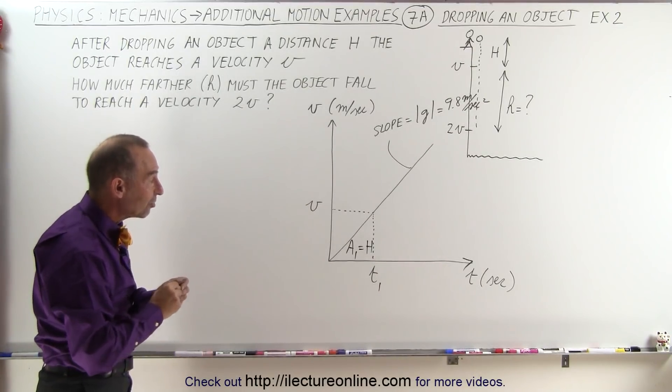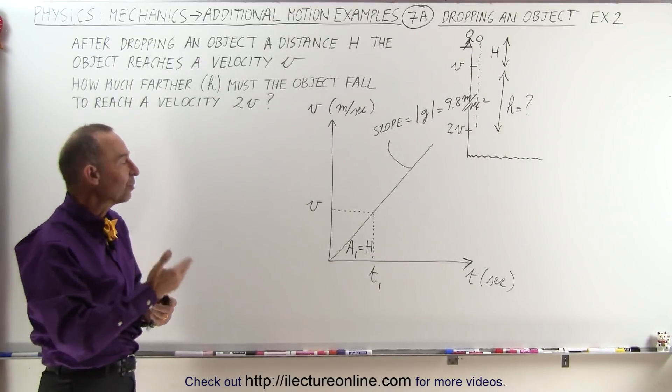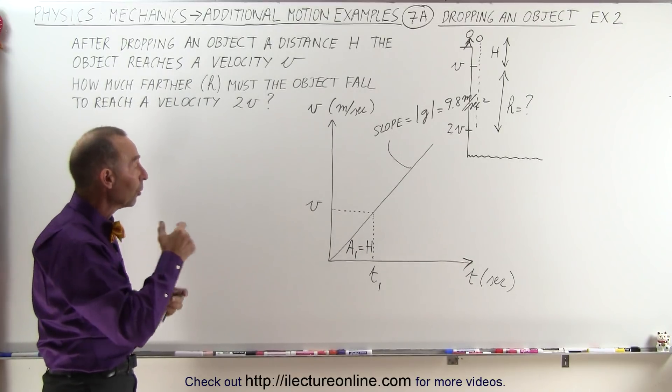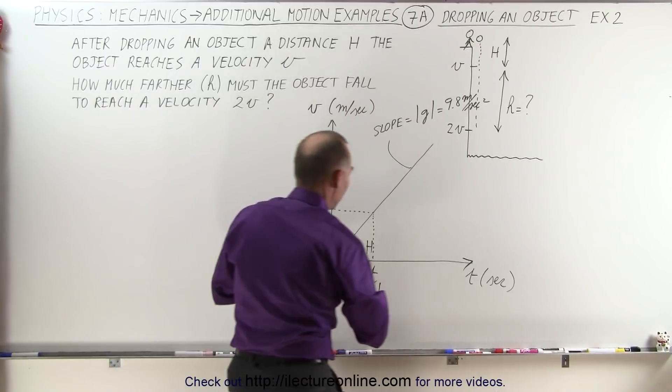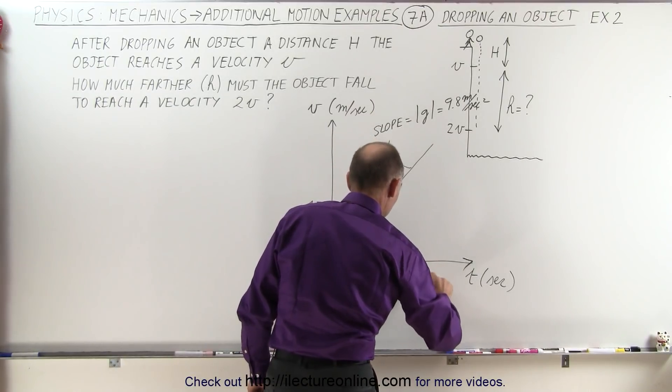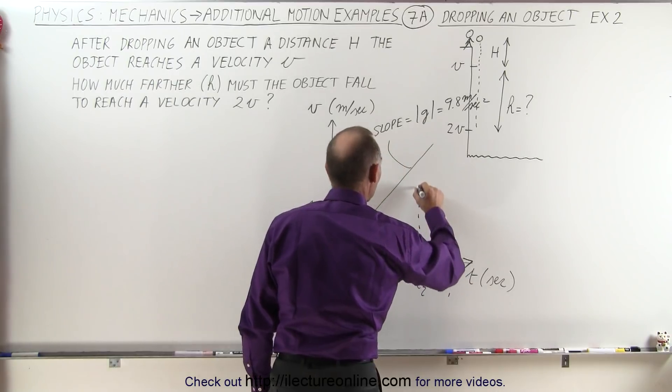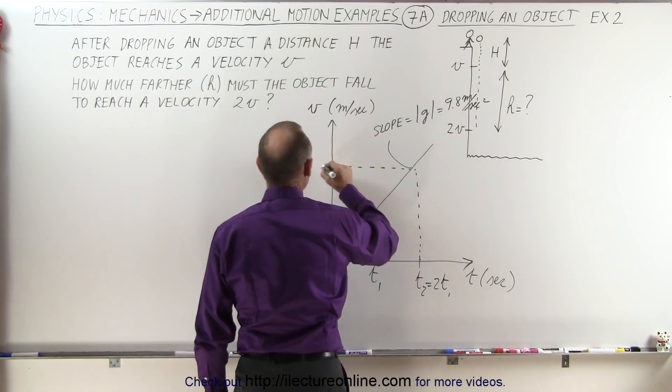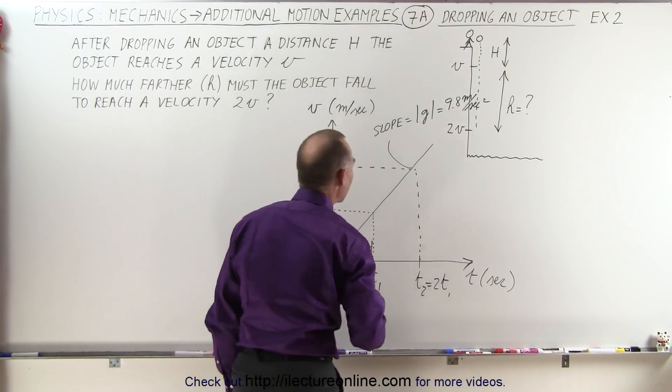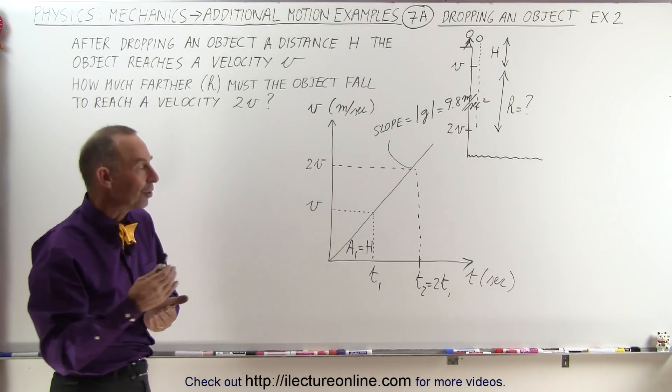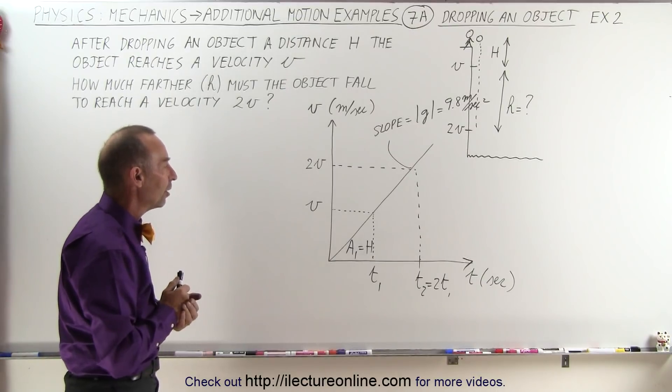Now since the acceleration is constant, 9.8 meters per second squared, it will take twice as long to reach double the velocity. So if we then go to t2 and t2 will be twice t1, we will have reached twice the velocity. So this will be 2 times v after having dropped twice as long. The question now is how much farther did the object fall?